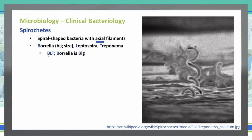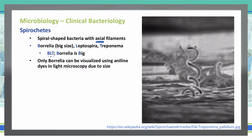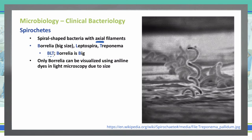You've got Borrelia as the B, L as Leptospira, and T as Treponema. Of these three, you can only see Borrelia using an aniline dye under light microscopy — because it is big, we can see it. However, Leptospira and Treponema are unable to be seen because they are so small.